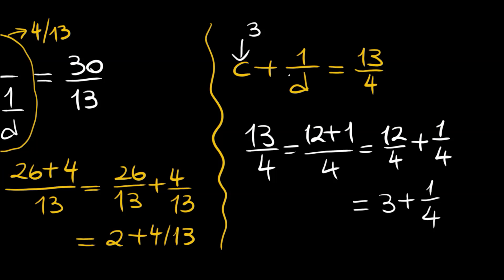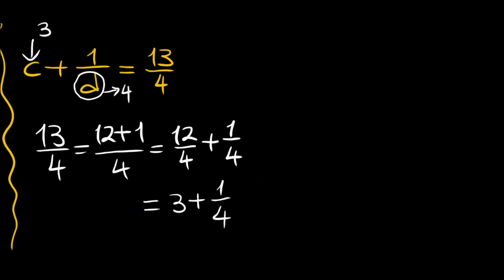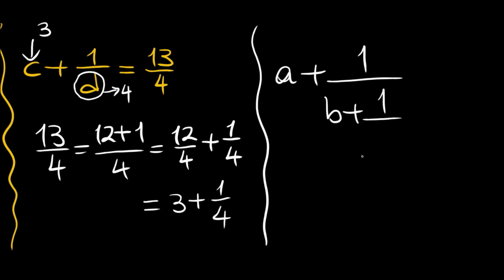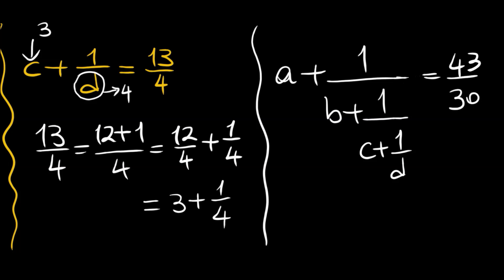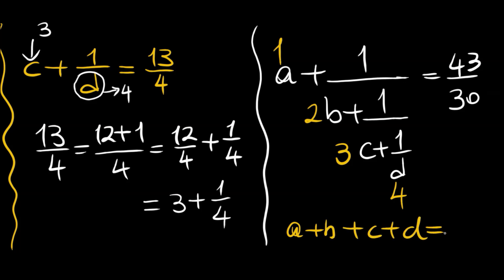And lastly, d becomes 4. So the original expression a plus 1 over b plus 1 over c plus 1 over d equals 43 divided by 30, and we found: a equals 1, b equals 2, c equals 3, and d equals 4. The sum of these values is 1 plus 2 plus 3 plus 4, which equals 10.